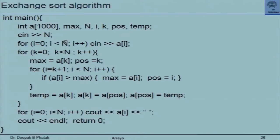Then we tell them that the program written to find the maximum and its position, and exchange that element with the 0th element, can easily be extended to do the entire sorting. We present a program where we read n elements into an array, set up an iteration for k equal to 0 to n minus 1, and instead of the 0th element, we consider the kth element as the anchor. From the kth element onwards, we examine all remaining elements, find the max, and exchange it with the kth element. Whatever was a[0] in the previous program is now a[k], with an internal iteration. After that exchange, we print all elements of the array and get a sorted result.